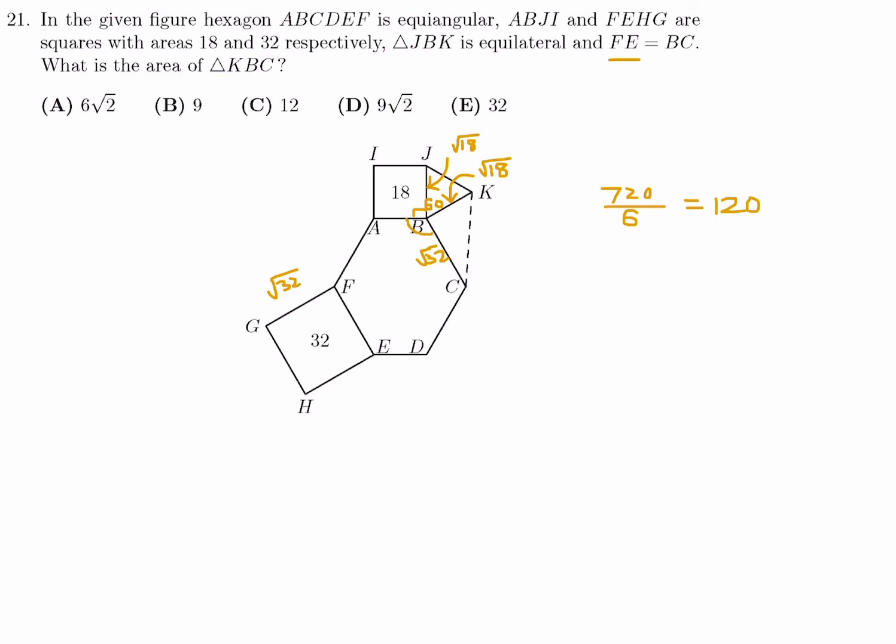So, now I can get this angle. I'll call it X. X plus 60 plus 90 plus 120 is equal to 360. So, that means X is equal to 90 when you solve for it. Perfect. So, that means this is indeed a right angle.